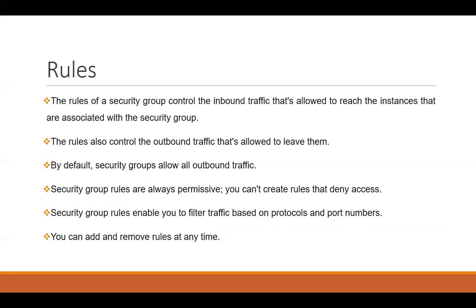Security groups are always permissive, so we cannot create rules that deny access — we will always give permissions that allow access to our EC2 instance. Security group rules enable us to filter the traffic based upon protocols, whether it's TCP, UDP, or ICMP, as well as based upon the port number.